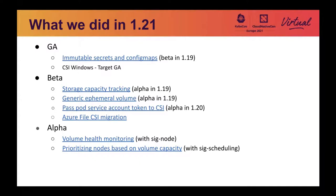In 1.21, we also have the pass pod service account token to CSI feature moved to beta. As mentioned earlier, this was just introduced as an alpha feature in 1.20. We also have Azure File CSI migration moved to beta in 1.21. We also have a couple of alpha features in 1.21. The first one is CSI volume health monitoring. This was first introduced as an alpha feature in the 1.19 release. In 1.21, we did a second alpha due to a design change where we moved the volume health monitoring logic from an external agent to kubelet. This feature enables CSI drivers to share abnormal warning conditions from the underlying storage system with Kubernetes so that they can be reported as events on PVCs or pods.